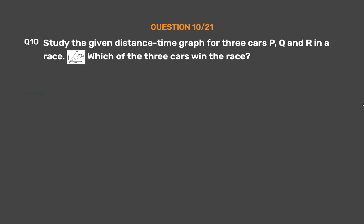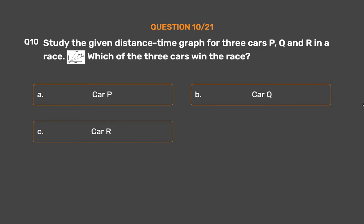Question No. 10. Study the given distance-time graph for three cars P, Q, and R in a race. Which of the three cars wins the race? Option A: Car P. Option B: Car Q. Option C: Car R. Option D: Both Q and R.